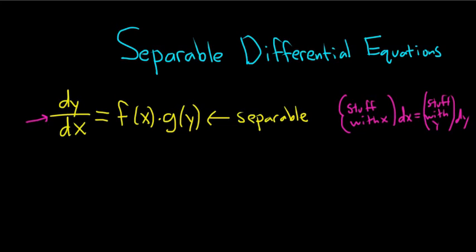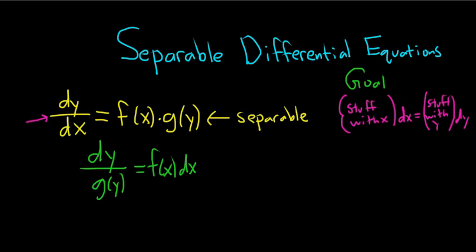So if we were to try to do that, we would divide by g of y and multiply by dx. That would give us dy over g of y equals f of x times dx. And we have accomplished our goal. Our goal was to have all the stuff with y, dy, equal to some stuff with x dx. Then you integrate both sides, and then you go from there.